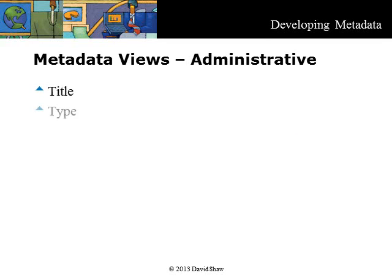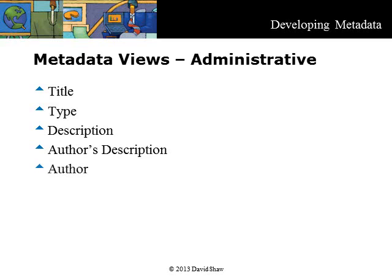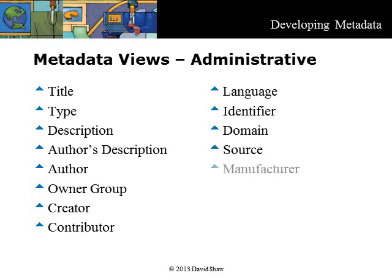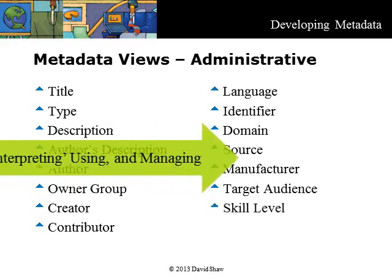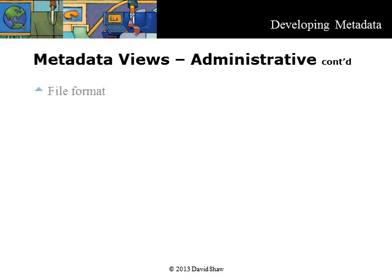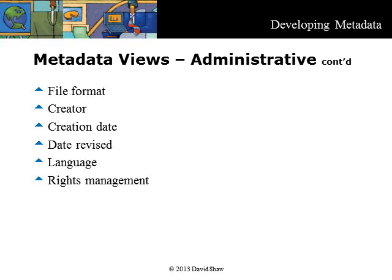Here are some examples of administrative metadata. Many of them are found in the Dublin Core standard, and you will find it very helpful to look this up and review the 15 core terms. You will probably think of other terms related to your business. Administrative metadata is also often referred to as use or asset metadata. It can encompass a variety of metadata related to viewing, interpreting, using, and managing information resources over time. Examples include information about the capture or encoding processes used in creating an information resource, such as file format, creator, creation date, date revised, language, and rights management information, to name a few.